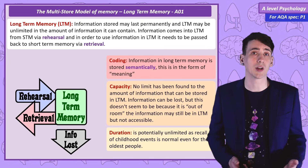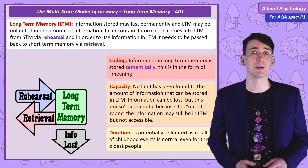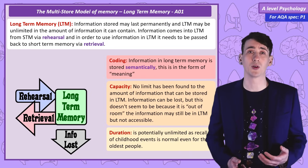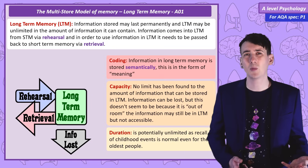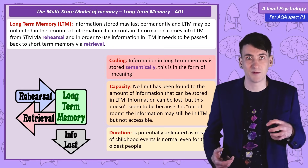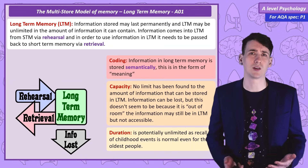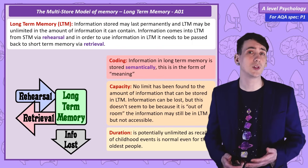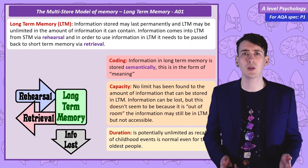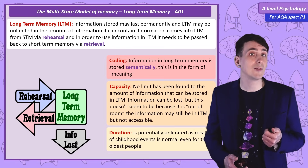Both the capacity and duration of long term memory are very large, potentially unlimited — because we haven't found the limit. The oldest people can still recall facts from their childhood, and we don't see a point at which brains get completely full. We do forget things, so we could argue information is lost, but maybe that information isn't truly lost — maybe we just lose the ability to access it and could recall it with the right cue.